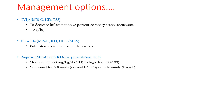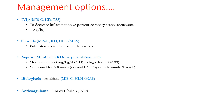Aspirin is used in MIS-C with KD-like presentation — those with risk of or frank coronary artery aneurysms — and also in Kawasaki disease. Moderate dose is 30–50 mg per kg per day QID; high dose is 80–100 mg per kg per day QID. It is continued for 6–8 weeks if echo is normal on presentation, or indefinitely if coronary artery aneurysms are present. Biologicals like anakinra are used in MIS-C, HLH, and MAS with poor response to anti-inflammatory agents. Anticoagulants like low molecular weight heparin are used in MIS-C and KD. Antibiotics are used in all entities but show the best response in TSS.